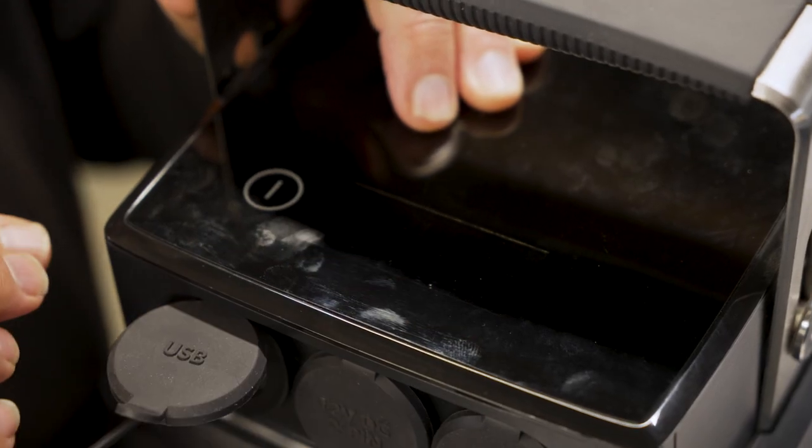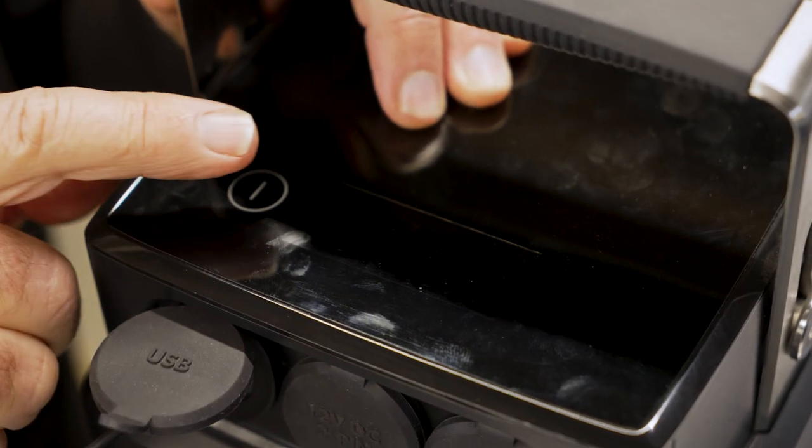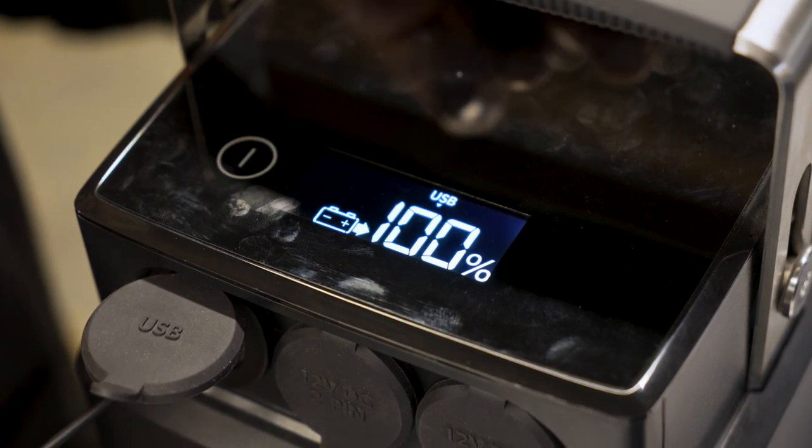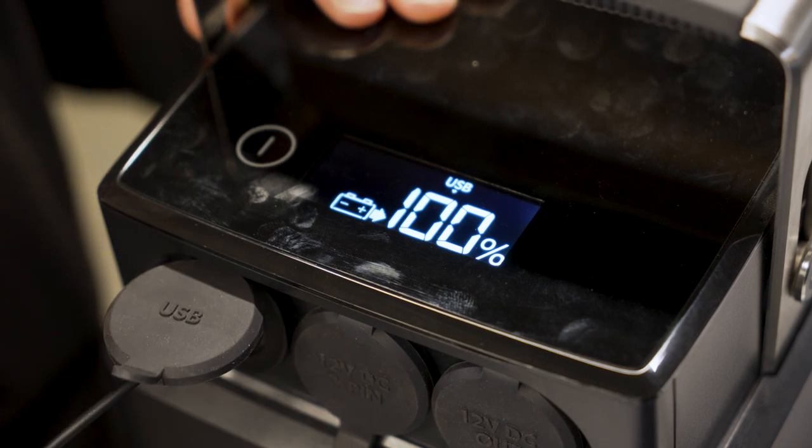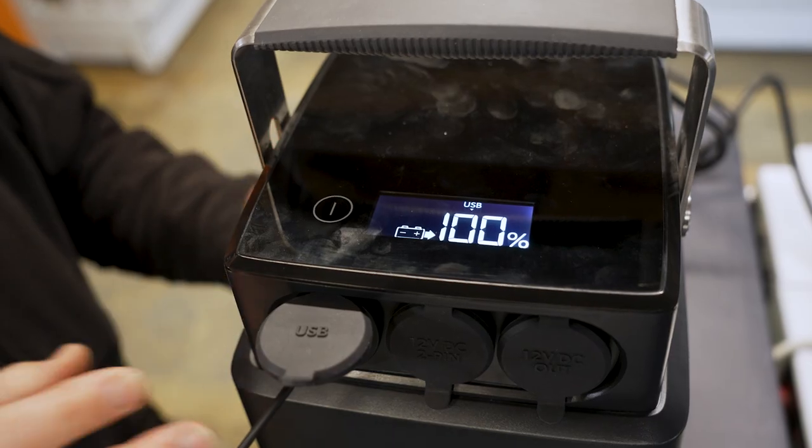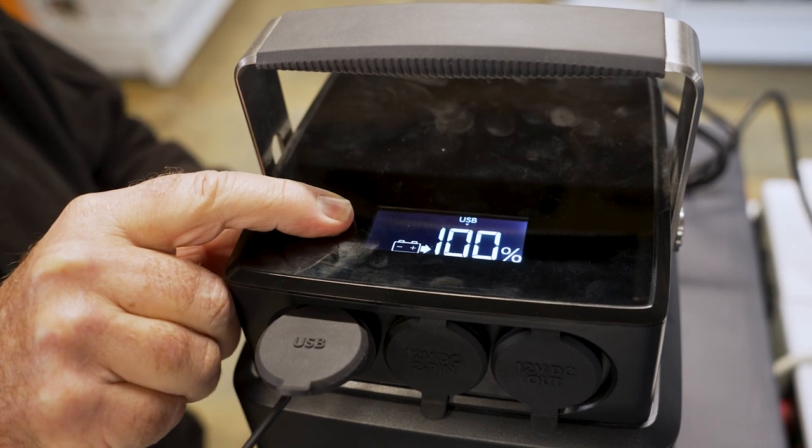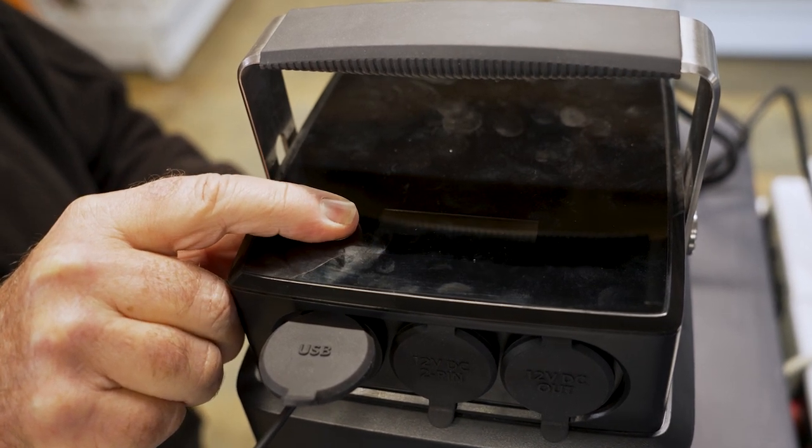As you can see, the display has turned itself off. That's because it's been a minute. To turn it back on again, you just tap that once. You can see the display is now back on, showing me the same thing. The USB port is on, and the battery is showing discharge. To turn this unit off, hold your finger on that button for one second, and it'll turn itself off.